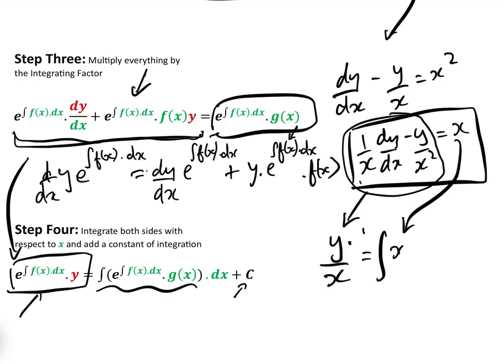And integrating x is quite simple, the integral of x dx. So, we have here y over x equals x squared over 2, plus our constant of integration. That's step four.